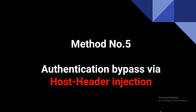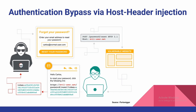Method number 5: authentication bypass via host header injection. We will see an instance of password reset poisoning. Suppose an attacker has your email address — they send a password reset link. When you click on that link, the unique reset password token is sent to the attacker's server, allowing a complete account takeover. The attacker injected their server URL in the header of the password reset request, and the vulnerable server sends you the reset link.